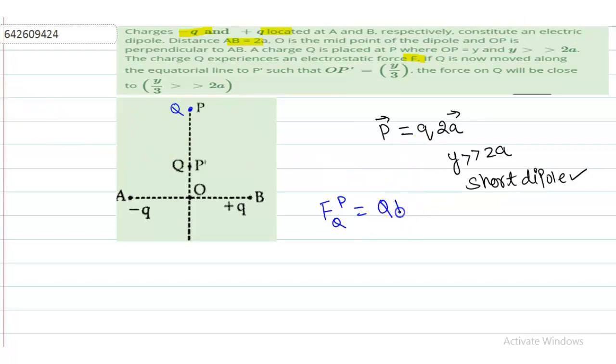And this is equatorial plane. We know for the dipole, what is the electric field at equatorial plane? It's kp divided by—q is that charge involved in the dipole divided by distance cubed. What is distance? Distance we have given as y, so this is y cubed. And it is given as F in the question.